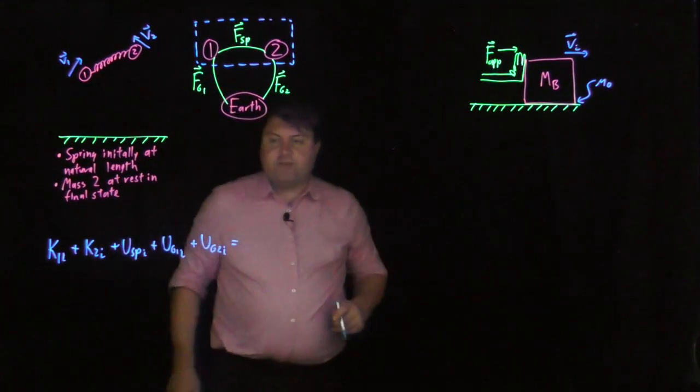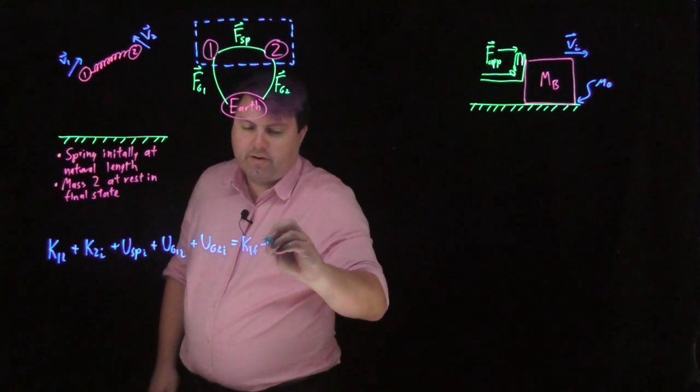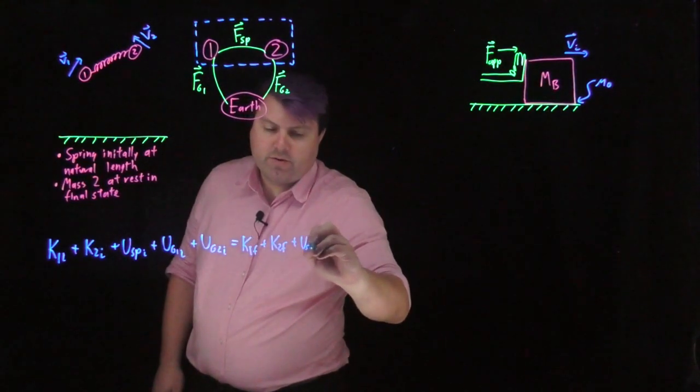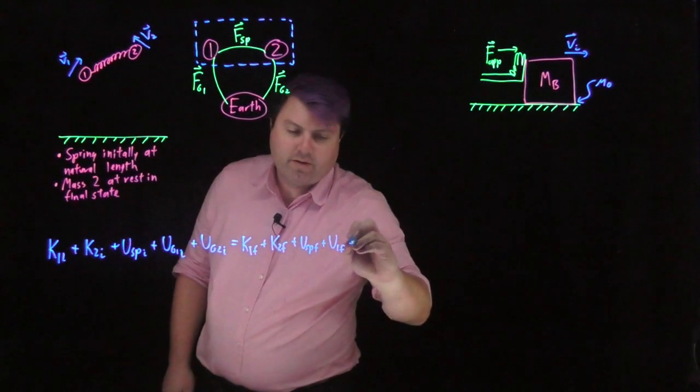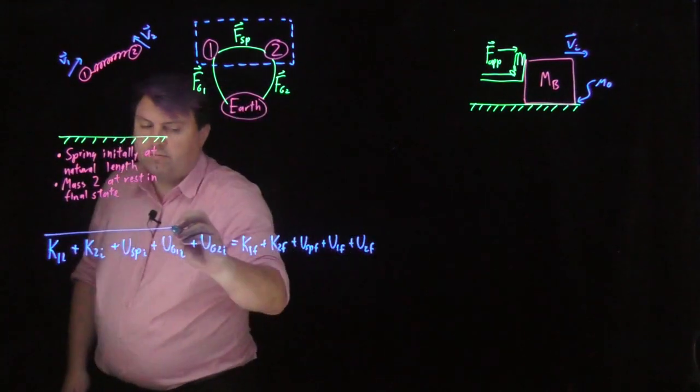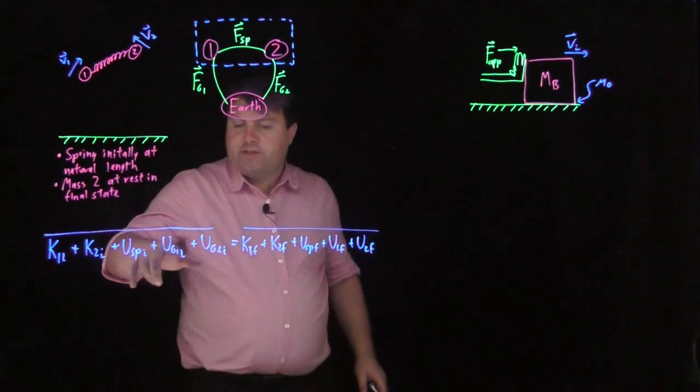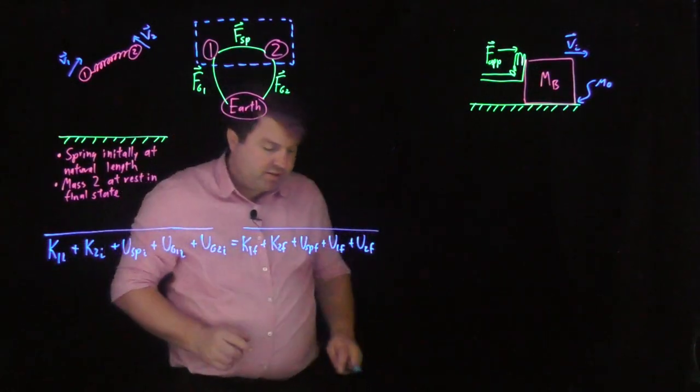And then we have those final states at the end. So, we have K1f plus K2f plus U spring final plus gravity for one final plus gravity for two final. And we're doing this just to help organize and understand how many different terms we have. Make sure that we have the same number of terms on each side.